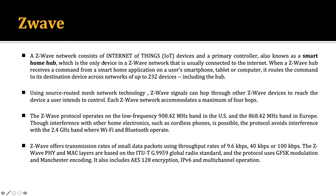A Z-Wave network consists of Internet of Things devices primarily controlled by a smart home hub. This Z-Wave network has a specific application in smart home environments, and the smart home hub is the only device in the Z-Wave network that is usually connected to the Internet.